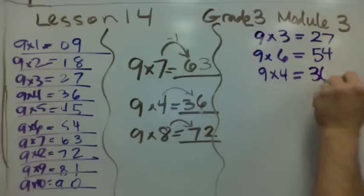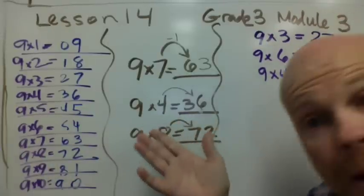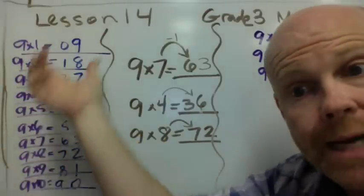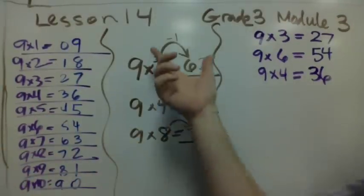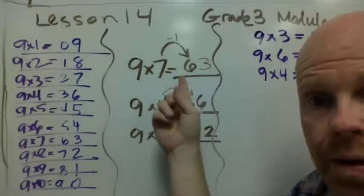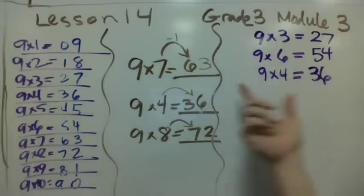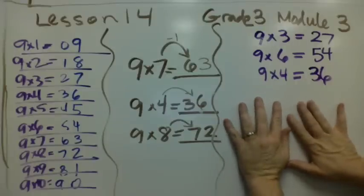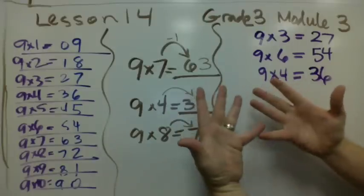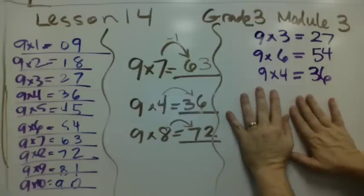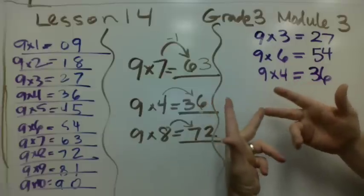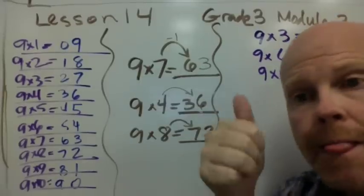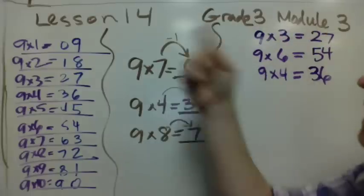And that is 3 really cool tricks for how to memorize or learn your 9 times tables. You've got this really cool pattern right here, the 9, 8, 7, 6, 5, 4, 3, 2, 1 pattern. You have the really cool pattern which is the minus 1, and then what do you have to add to get 9. And then you have this really cool finger trick right here that I would love for you guys to practice. Maybe one of these days I'll show you another trick that not only helps you with your 9s but also shows how to do your 6s, 7s, 8s, and 9s. So good luck. That is Grade 3, Module 3, Lesson 14.